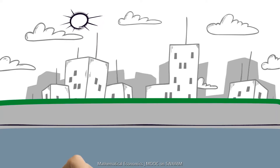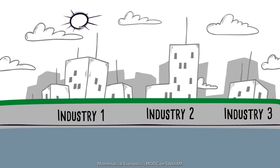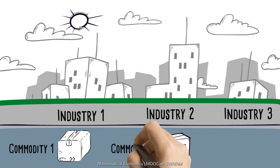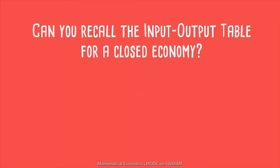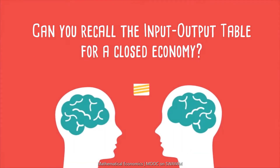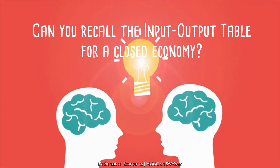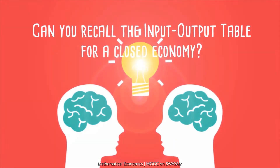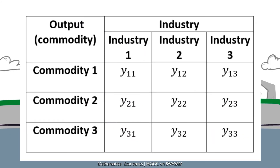Suppose an economy has three industries and produces three commodities. Industry 1 produces commodity 1, industry 2 produces commodity 2, and industry 3 produces commodity 3. Can you recall the input-output table for a closed economy? If you could recall, then you must be able to express the current situation in an input-output table. This is the closed input-output table for the three industries producing three commodities without a final demand component.